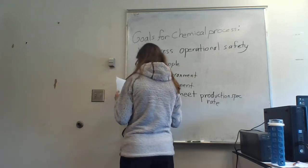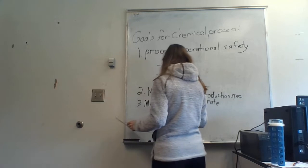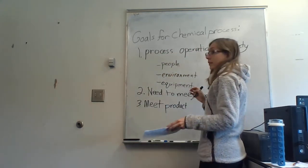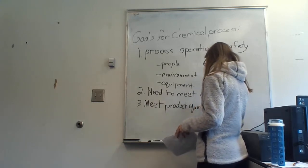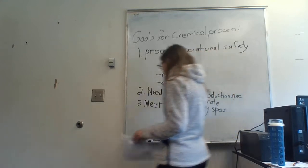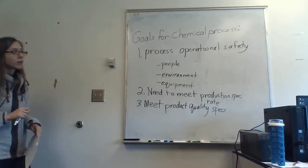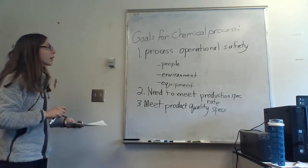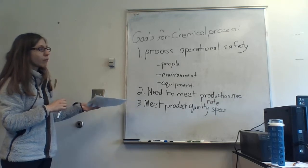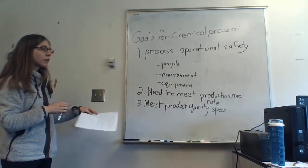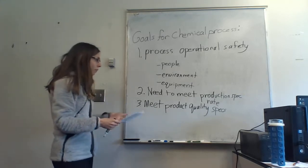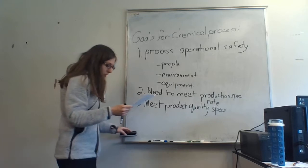Third, you have to meet your quality specifications. There might be things like, I can't sell this unless it's such and such purity. Essentially, you want to build a process that is safe to operate and makes the amount of material you need at the purity and quality you require.